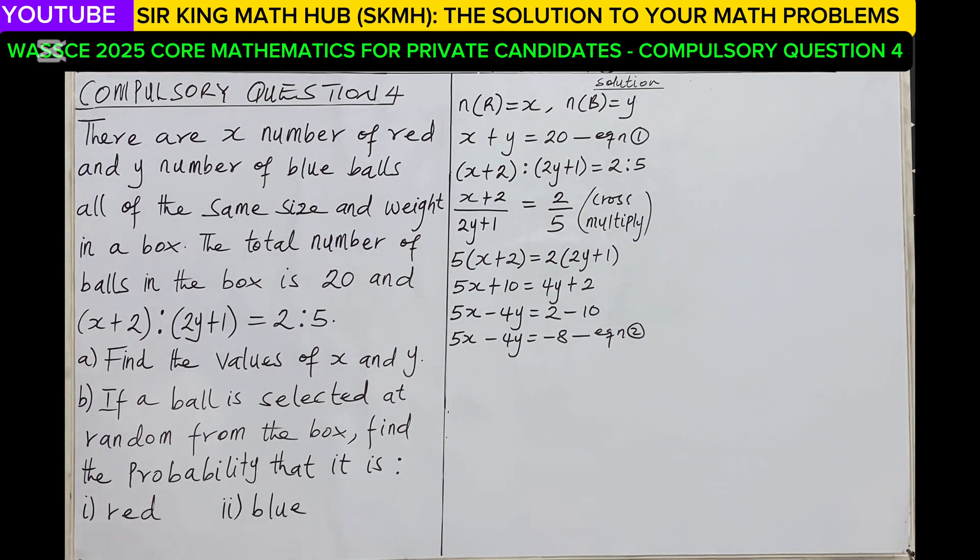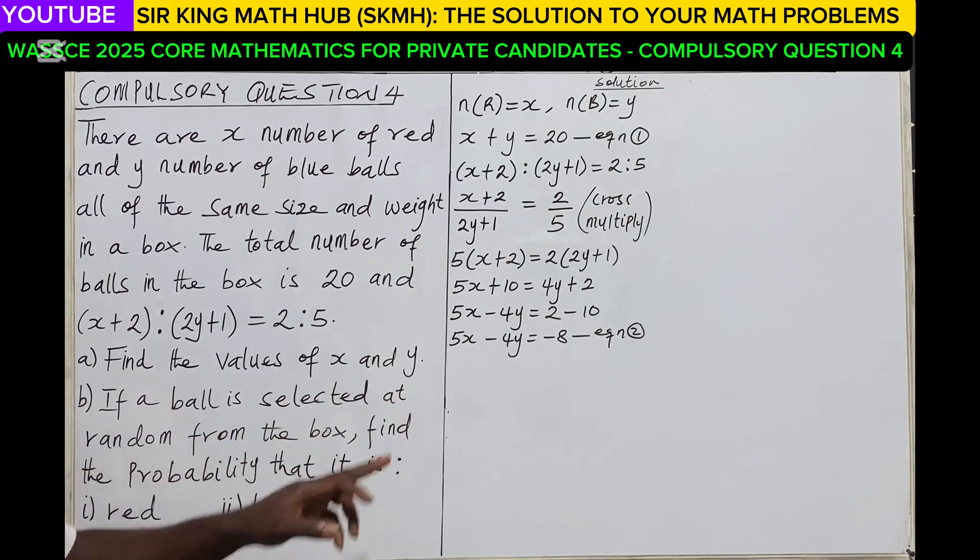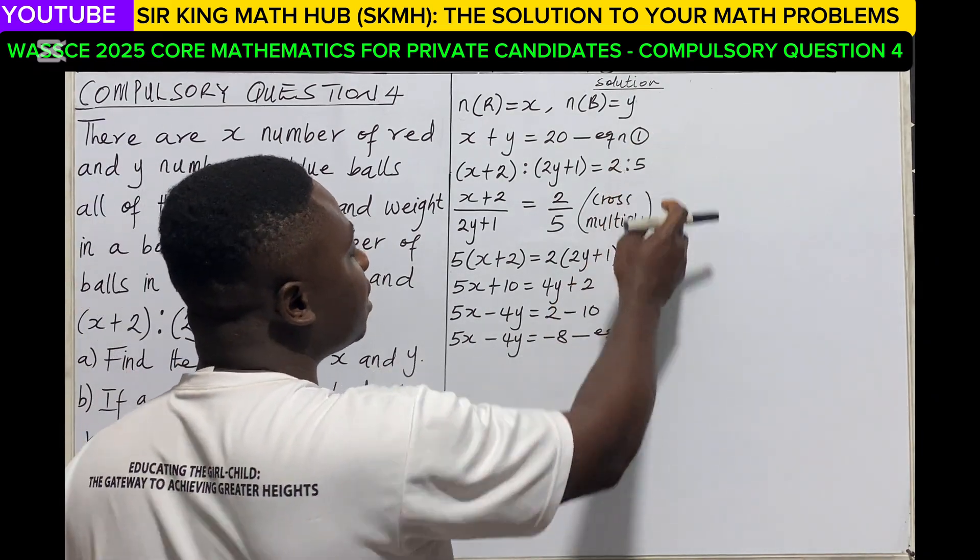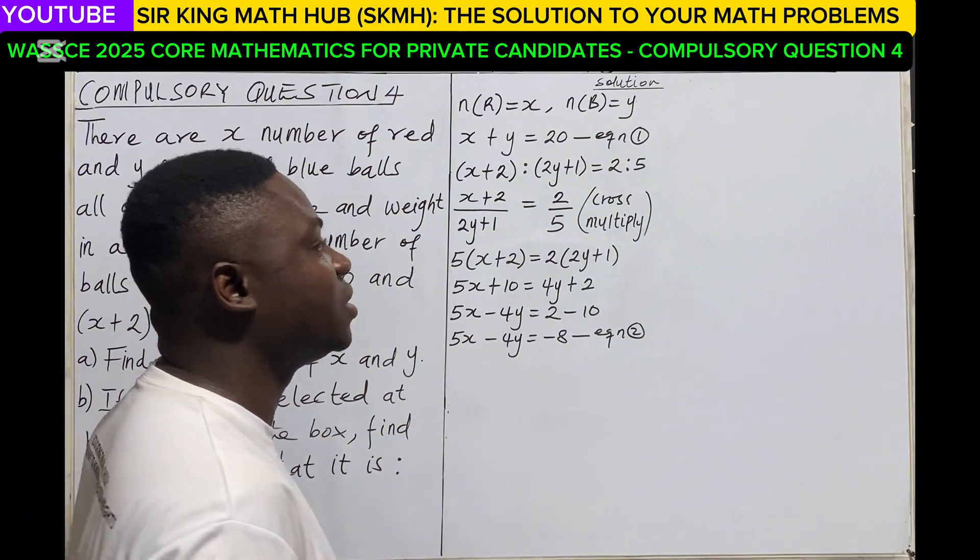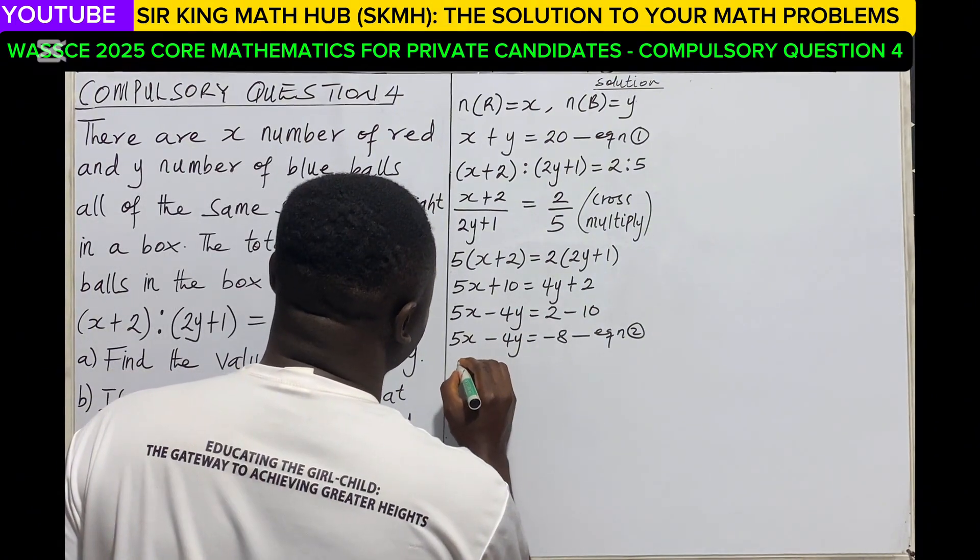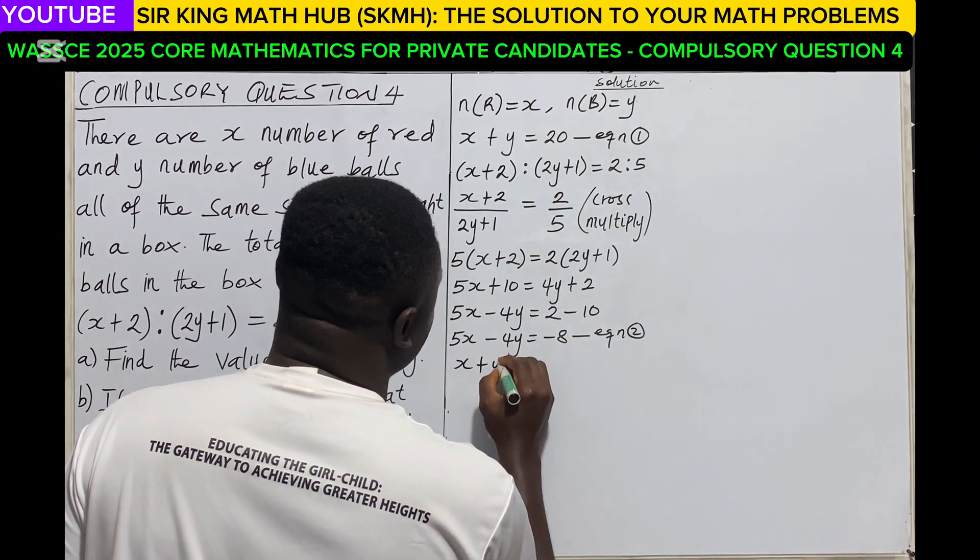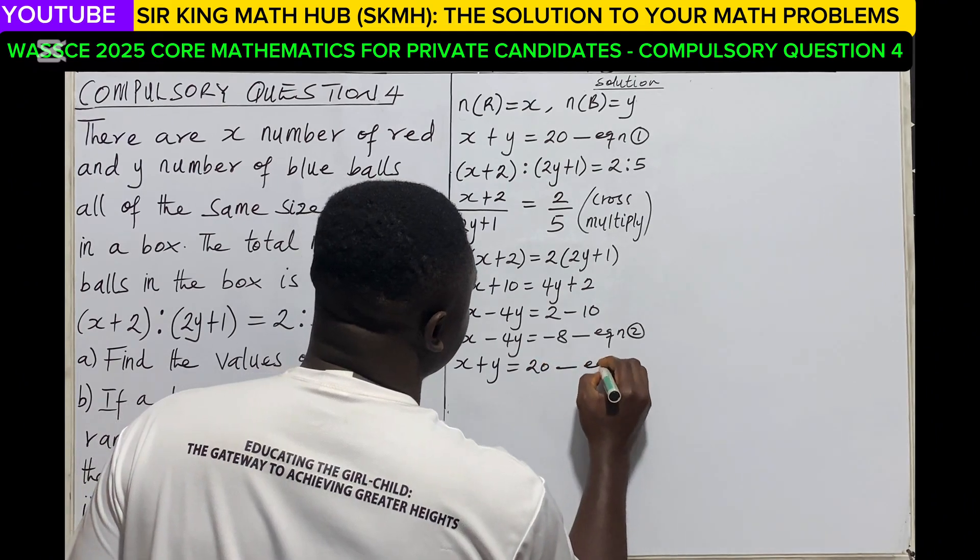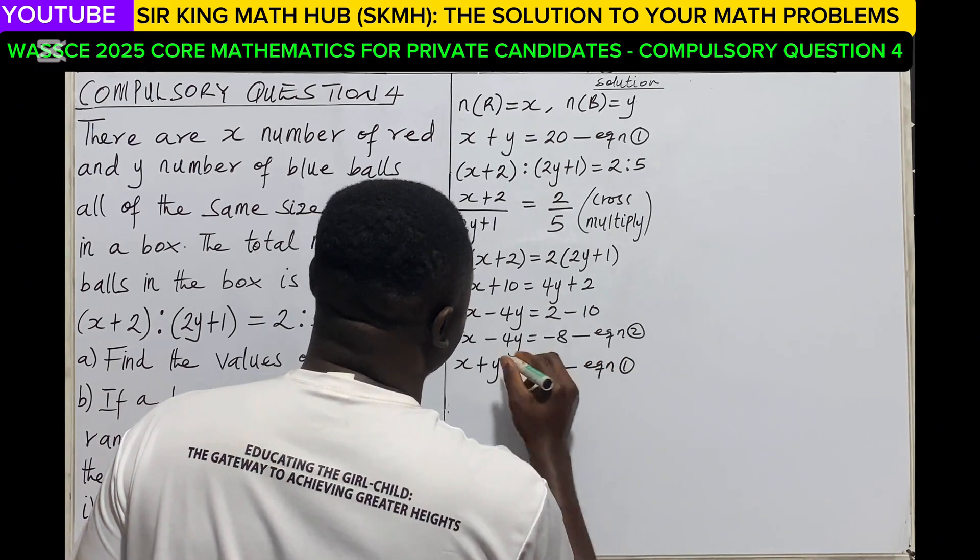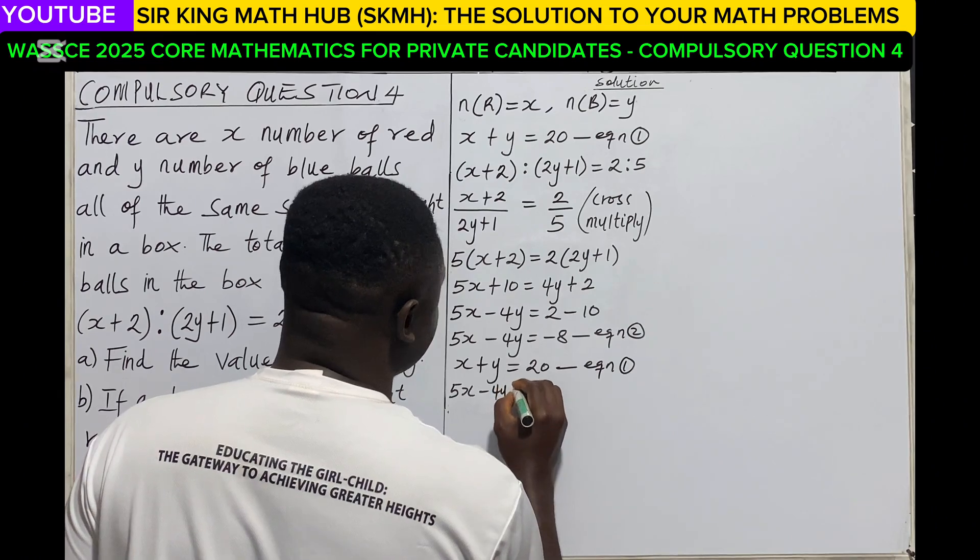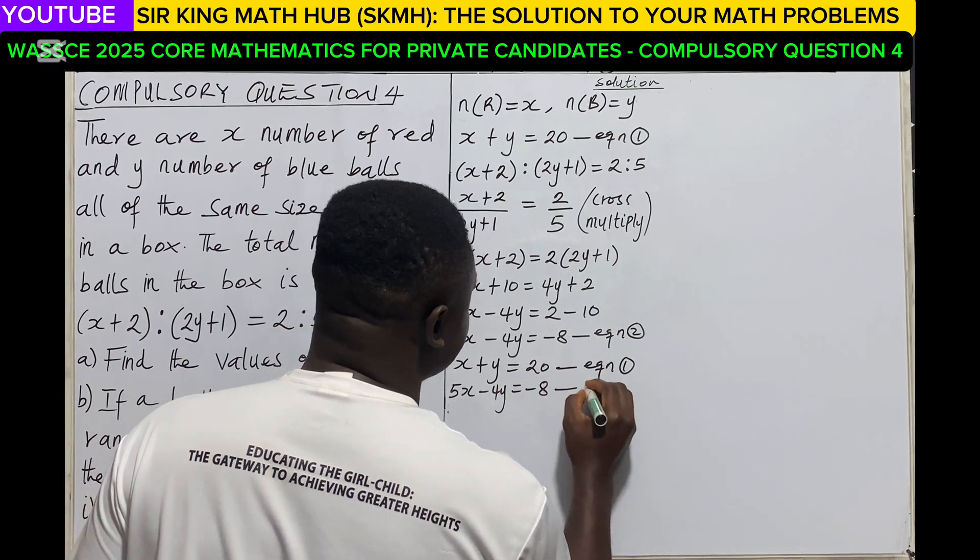Remember that in part A, we have to find the values of x and y. So to find the values of x and y, we need to solve equation 1 and equation 2 simultaneously. So let me repeat them. For equation 1, we have x + y is equal to 20. And for equation 2, we have 5x minus 4y is equal to minus 8.